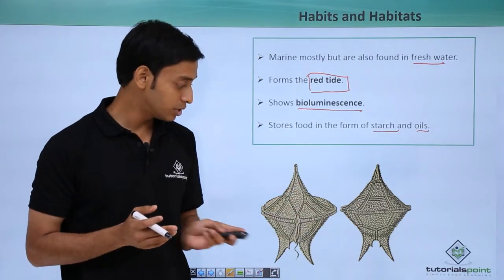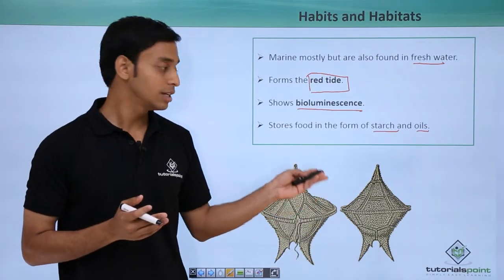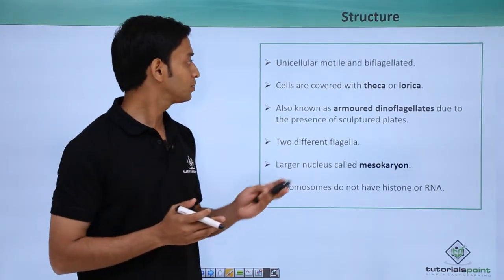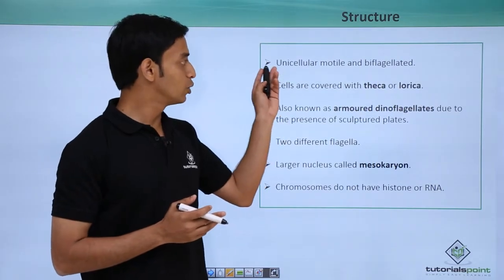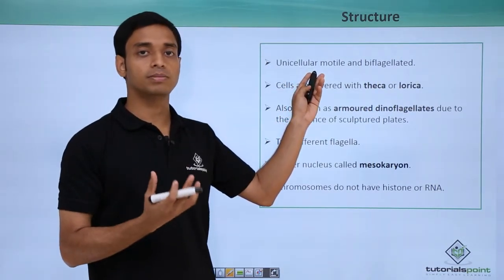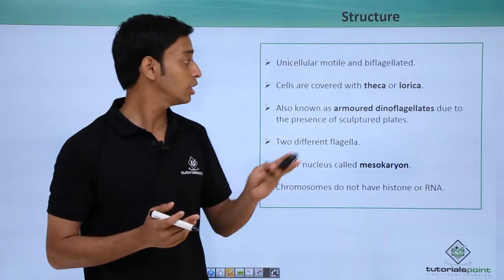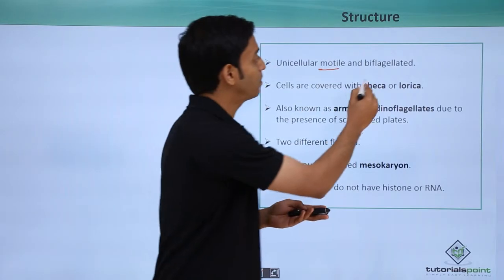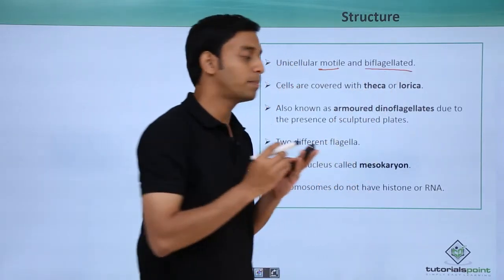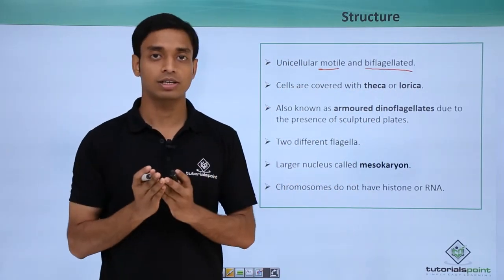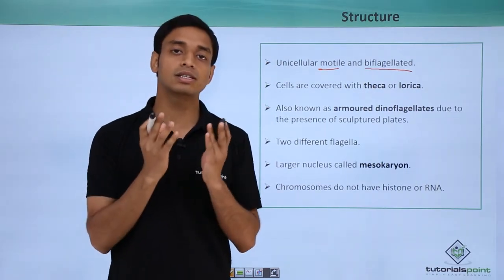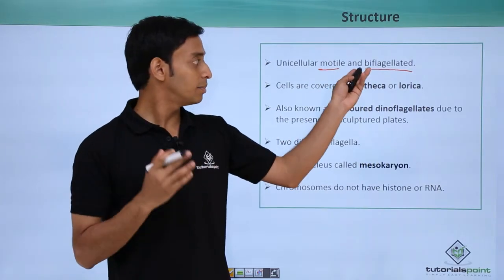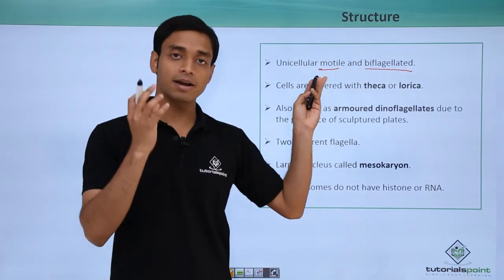Here you can see a diagrammatic representation of dinoflagellates. Looking at their basic structure: they are unicellular, they are motile — meaning they can move — and they are biflagellated, meaning they have two flagella, which can be present in different positions.